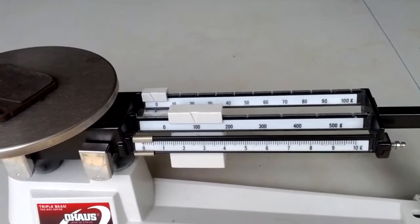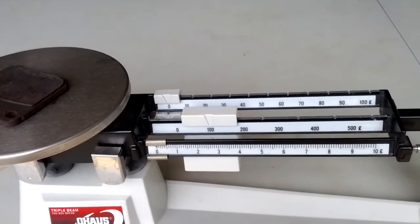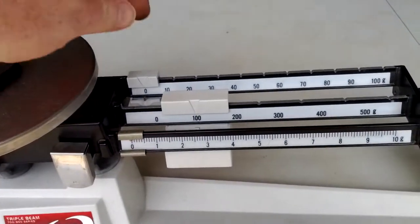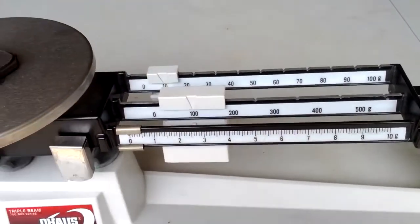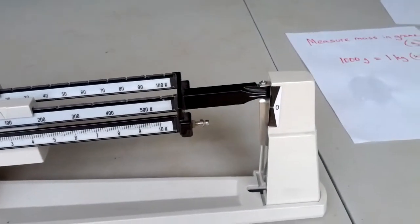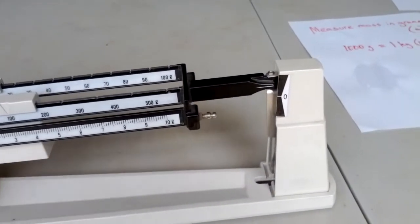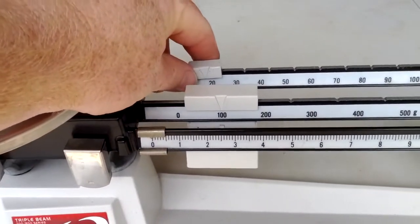Once you've got the hundreds set, now you need to set the tens. So you slide the 10 over one notch to the 10. Make sure the arrow is pointing right at the 10. And when I slide it to 10, I'm still all the way to the top. See how that works? It's all the way at the top.